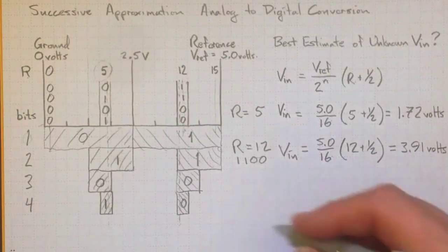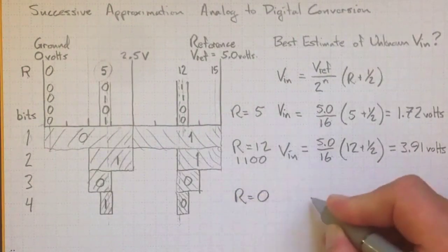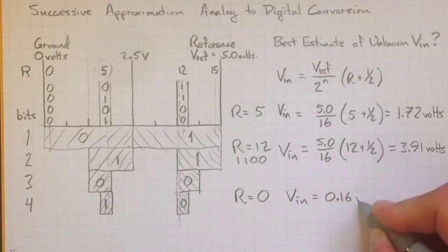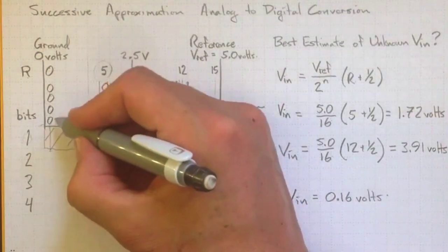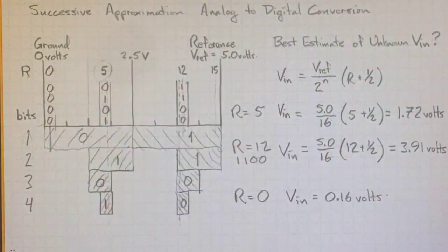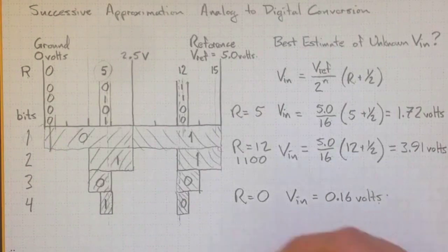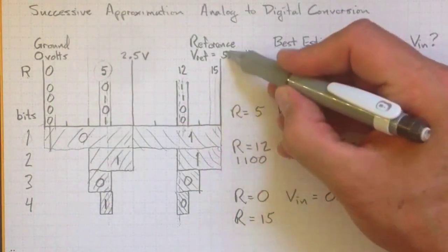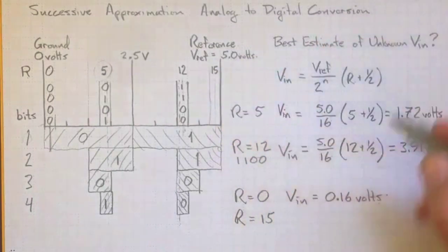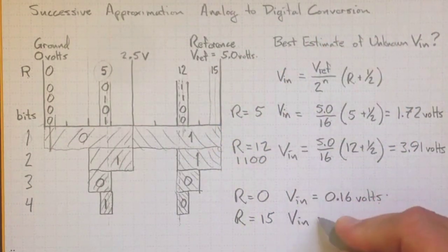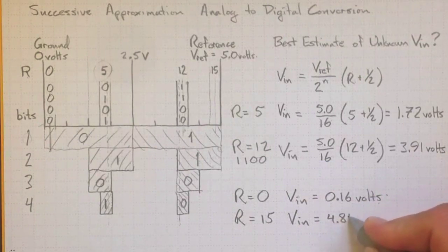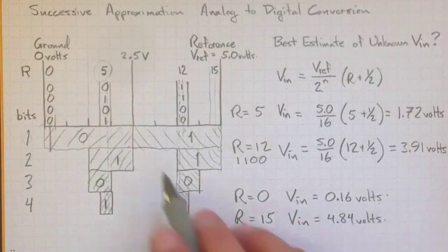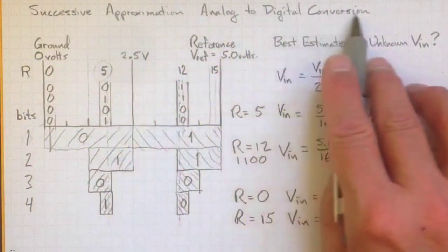And let's try a couple of limiting tests. Suppose R was equal to 0. That would give us Vn, our estimated Vn, as 0.16 volts. So not 0 volts, it'll tell us that we're somewhere in this first zone here, and that's about the middle of that first zone, 0.16 volts. Likewise, if R was equal to 15, that means we're in this last region here, not quite up to 5 volts. We might have 5 volts, we might have less, and when we plug it into the equation, we get Vn equal to 4.84 volts.